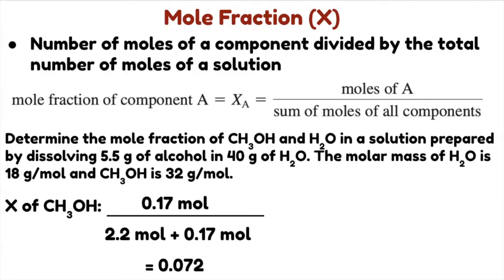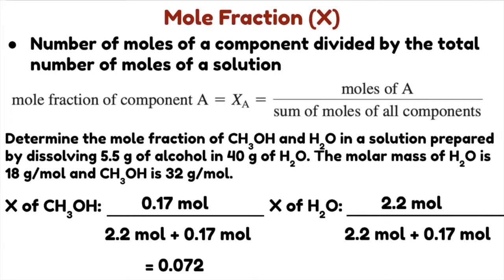To get the mole fraction of H₂O, the mole of H₂O goes in the numerator: 2.2 mol / (2.2 mol + 0.17 mol) = 0.93.